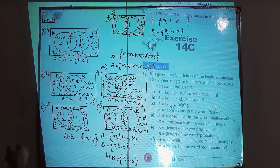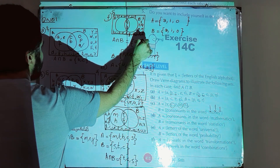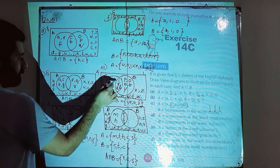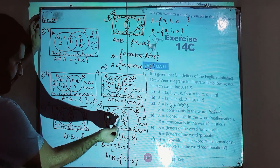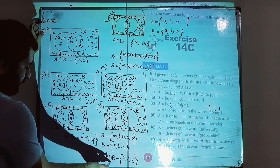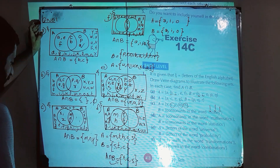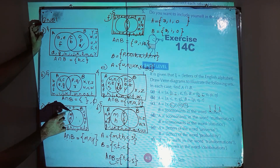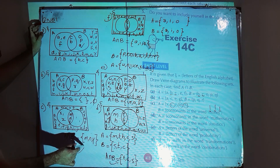A intersection B for part f is {a, i, o}. For part e, A intersection B is {i, r, a, l} — the elements in the overlapping section. For part d, A intersection B = {t, c, s}. A intersection B is the set containing elements common to both A and B, so the elements in the overlapping part — m, n, y — are the answer for part c's A intersection B.